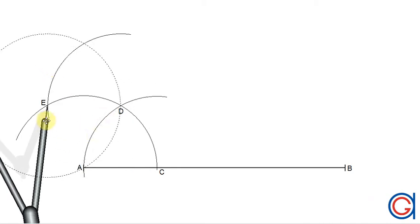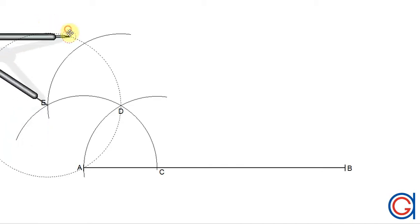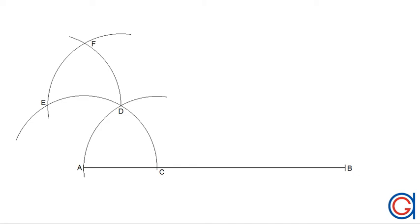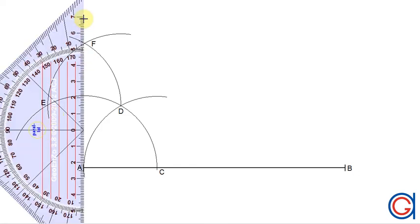And now, setting our compass on this new point E, we scribe another arc intersecting our previously drawn arc at a new point which we will call F. And finally, we now join the endpoint A through the intersecting point F to form our perpendicular line.